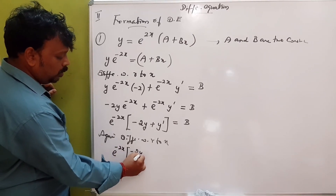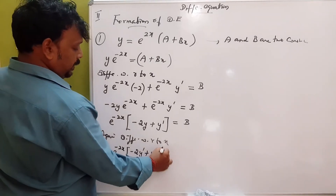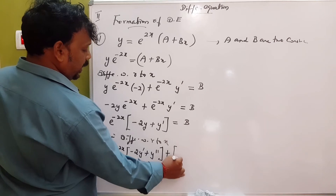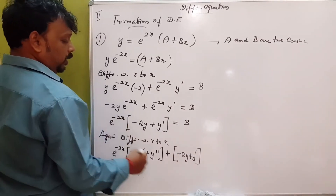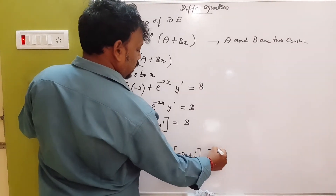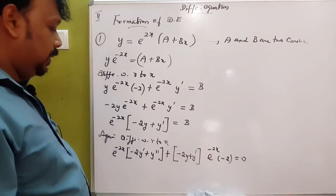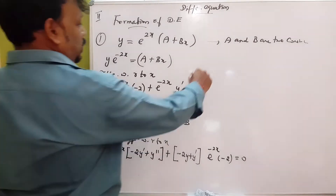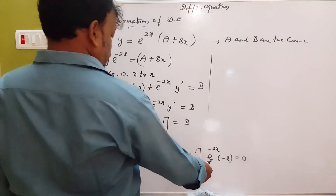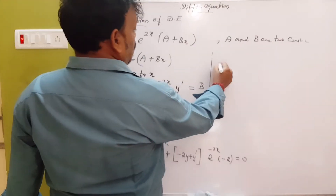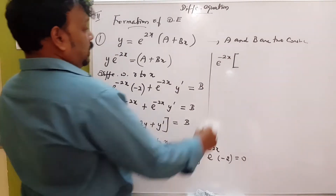2y to y prime, y prime to y double dash. Plus we can do: 2y plus y dash, times e power minus 2x. Right inside, the constant is 0. We can go to e power minus 2x. So the answer becomes: 2y dash plus y double dash combined.